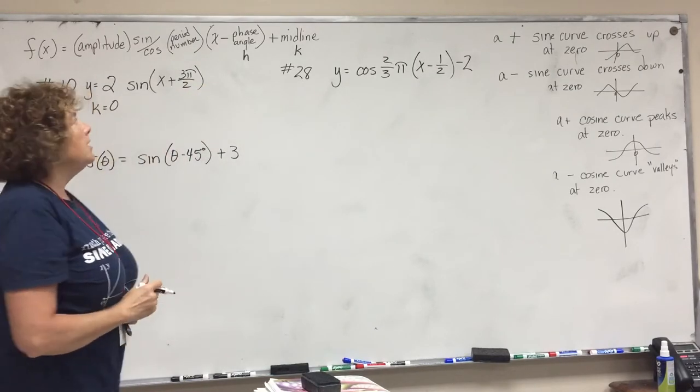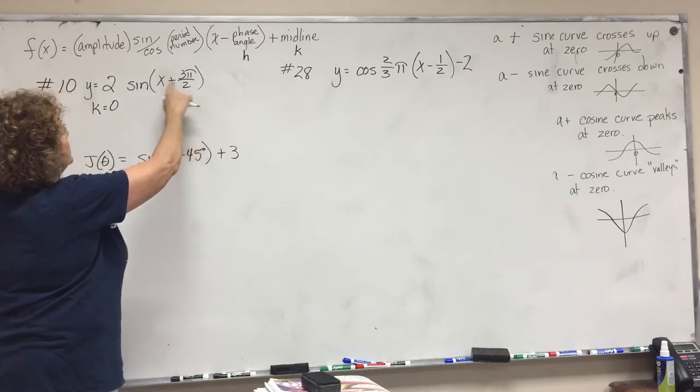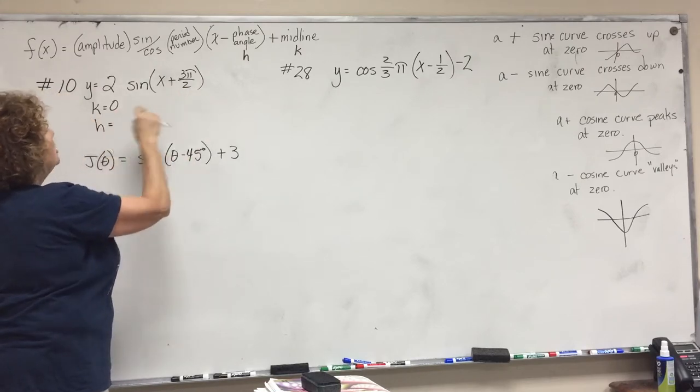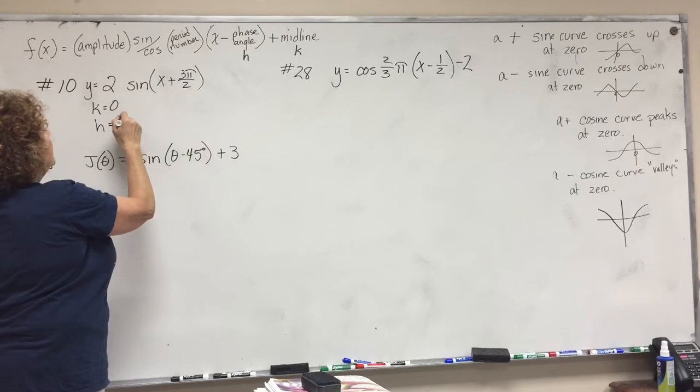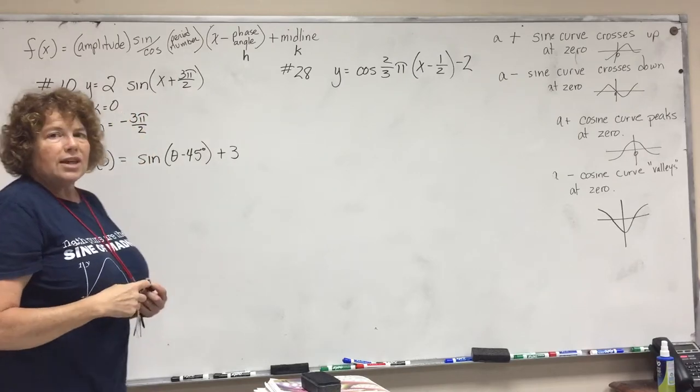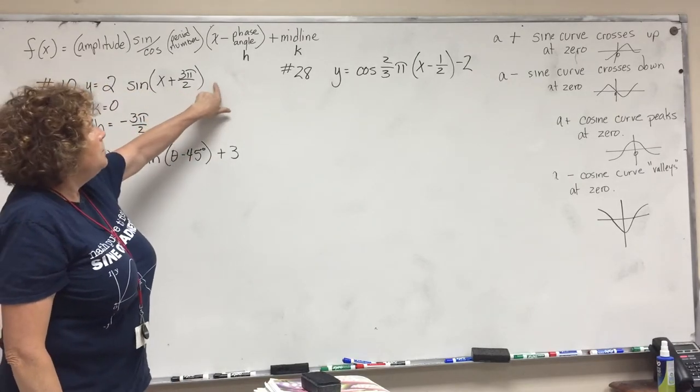Now in here there is something in parentheses, and since it's normally X minus the phase angle which would be H, then that means this phase angle is negative 3π over 2. So that's how you find it: you just H would be the opposite of what's in parentheses and K would be the number that's out here.